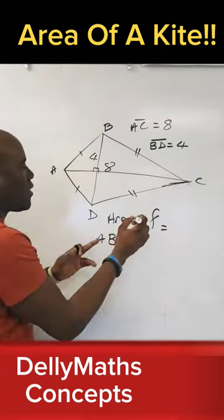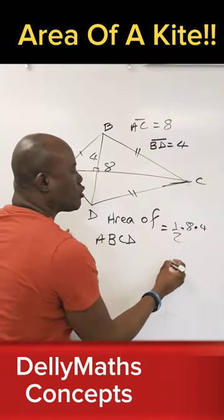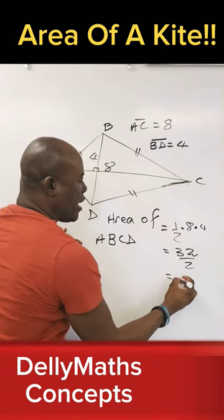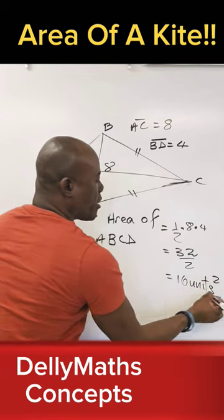So the area is simply half times diagonal one times diagonal two. In this case, it's 32 divided by 2, and we get 16 units squared.